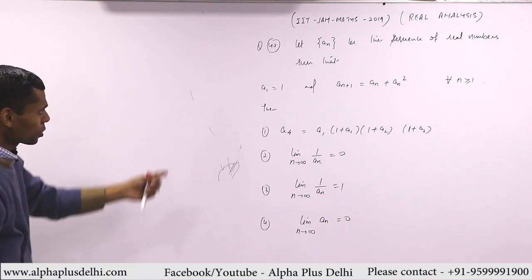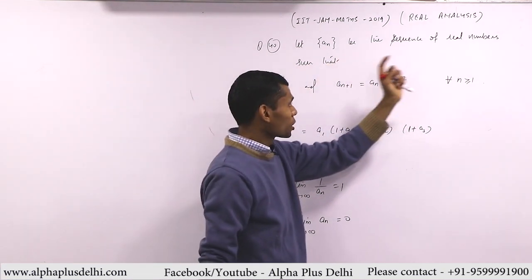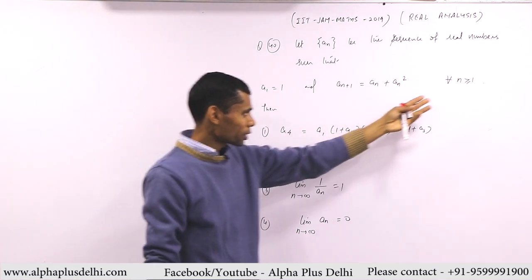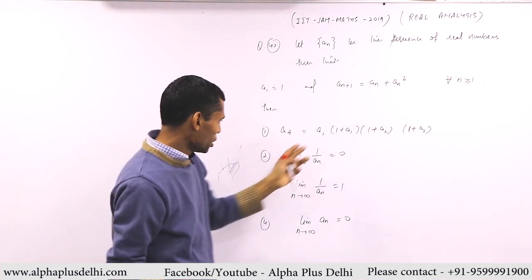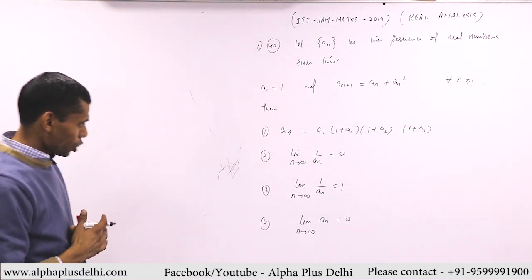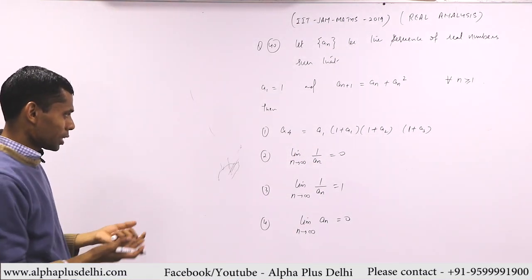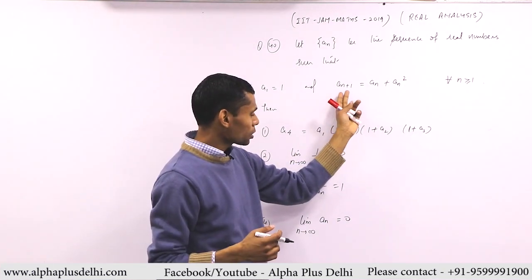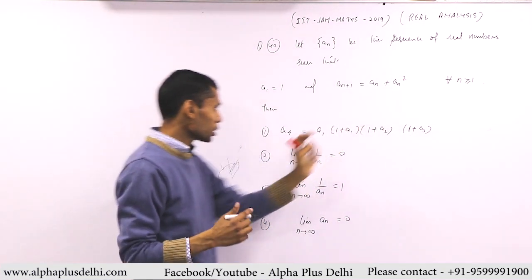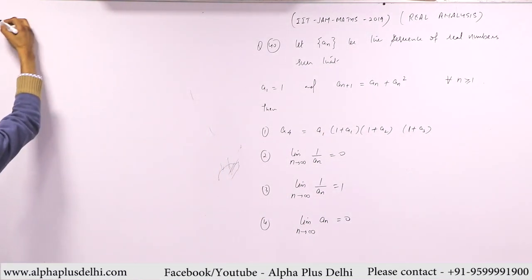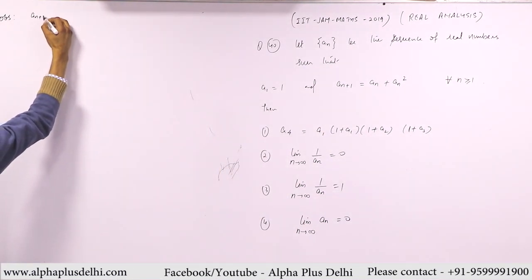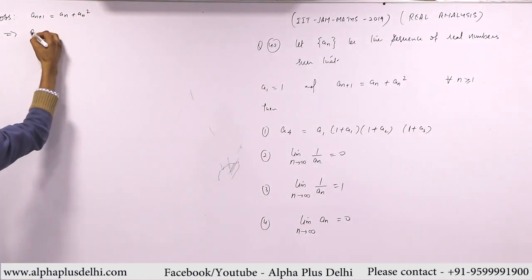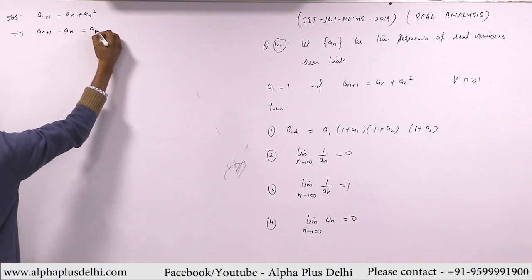Look at the present question. Let a_n be the sequence of real numbers such that a_1 is given and a_{n+1} is given. That means from here we can have a_2, a_3, and so on. The options are not very simple. Before we go to the question, look at the expression a_{n+1} = a_n + a_n^2. Immediately you can observe. Since a_{n+1} = a_n + a_n^2, this implies a_{n+1} - a_n = a_n^2.